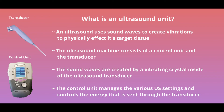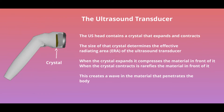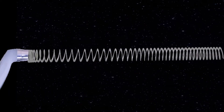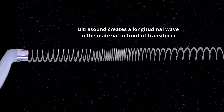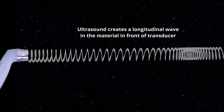The ultrasound unit consists of a control unit and a transducer. The control unit determines the amount of energy that's sent to the transducer. The transducer converts electrical energy into sound waves. The sound wave is created by a vibrating crystal inside the transducer. It's the crystal inside the transducer head that determines the effective area producing energy. We refer to this area as the effective radiating area or ERA of the crystal. The expansion and contraction of the crystal creates a longitudinal wave that travels out from the transducer head.